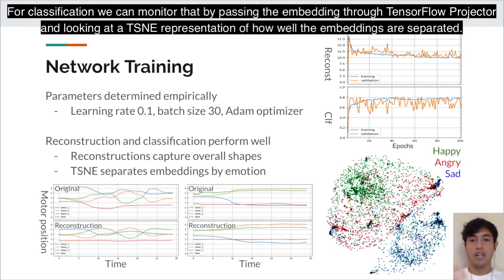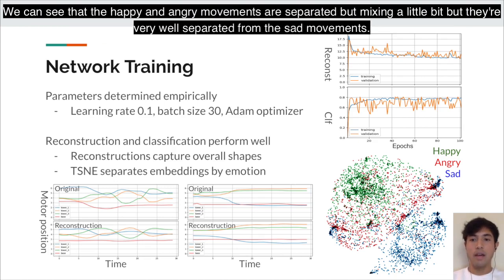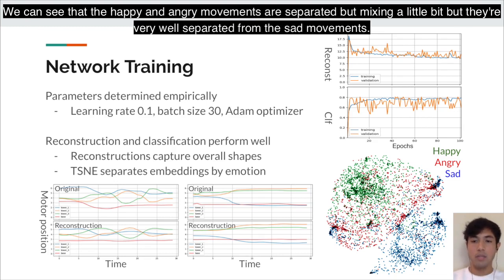For classification, we monitor performance by passing embeddings through TensorFlow's projector and looking at a t-SNE representation of how well the embeddings are separated. We can see that the happy and angry movements are separated but mixing a little, while they are very well separated from the sad movements.